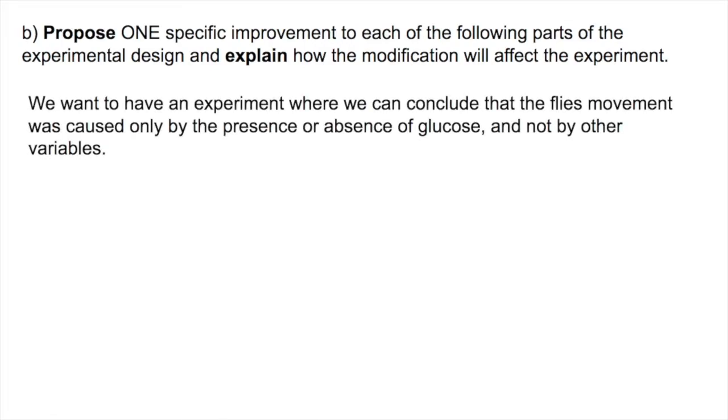So we want to have an experiment where we can conclude that whatever the distribution of the flies is, it was only caused by the presence or absence of glucose and not by other variables. There are two main parts of this experiment: the control itself and checking for other variables and factors. To address the issue of the control, we can make sure that environmental factors are constant. We need to make sure the temperature and lighting and all that is constant during the experiment.